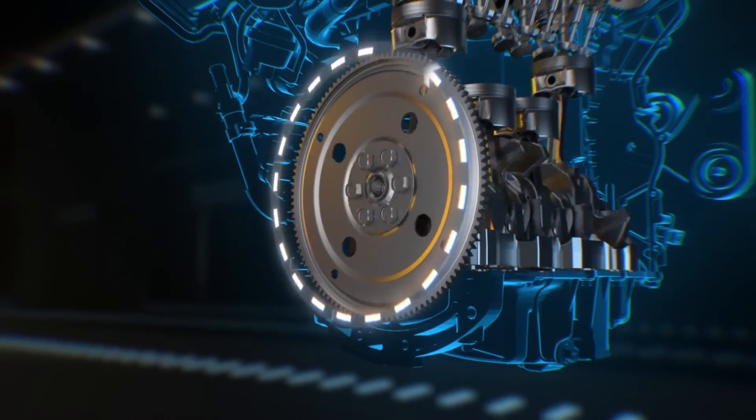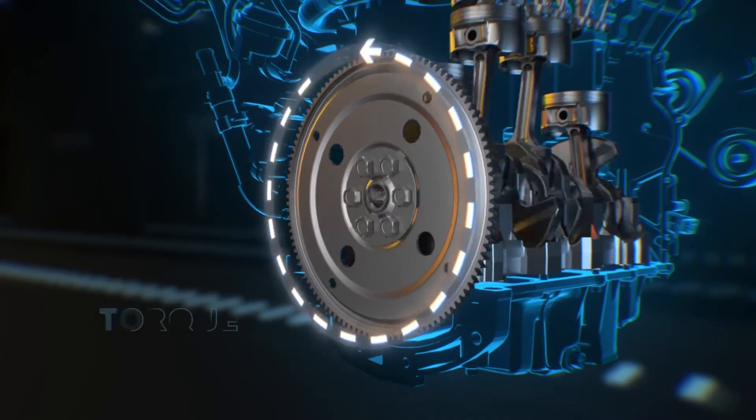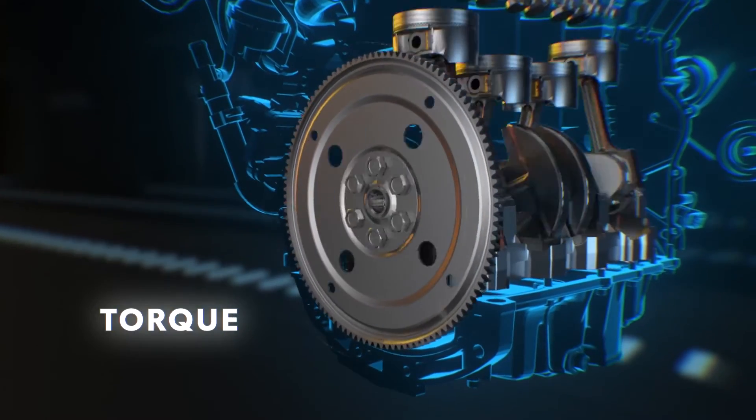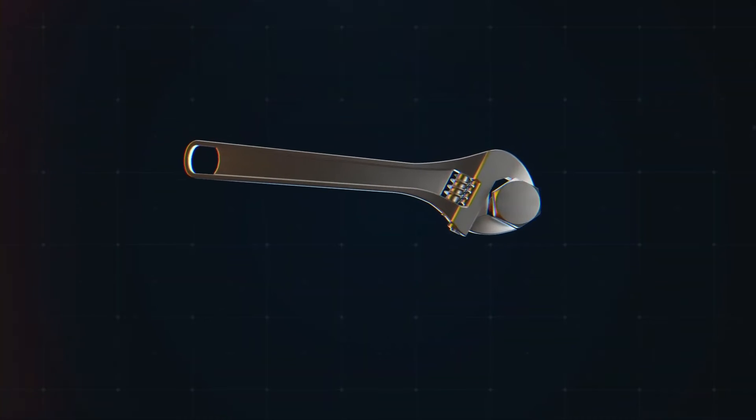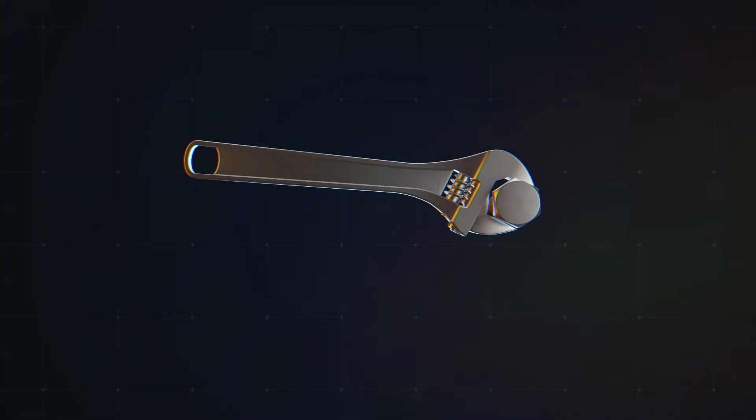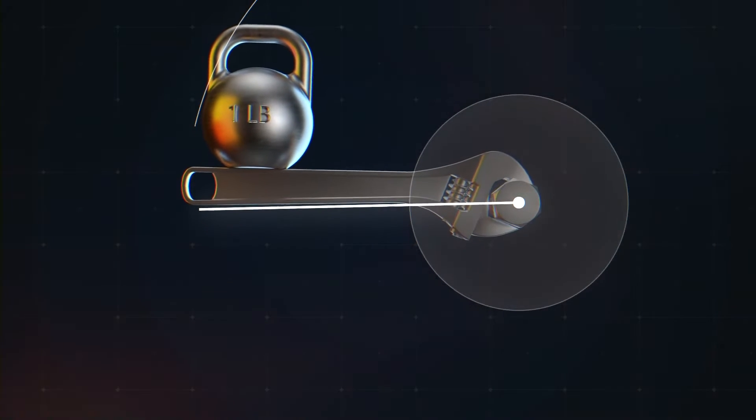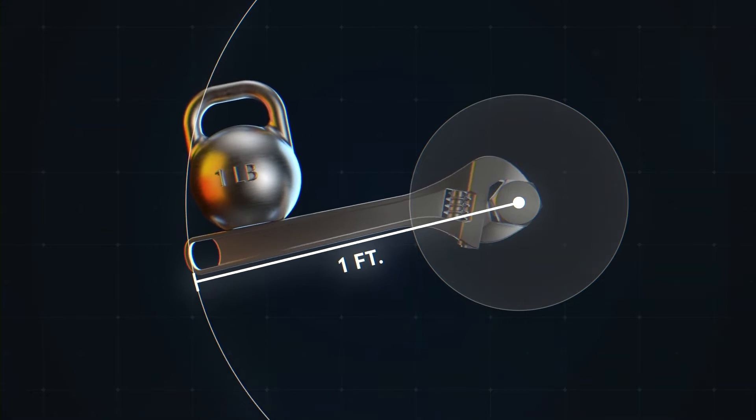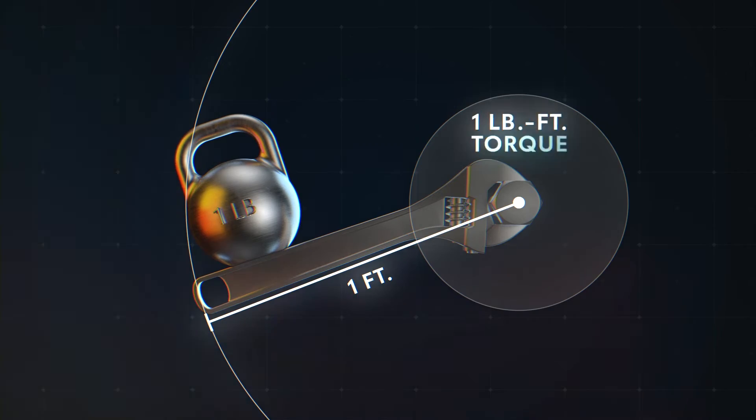So what's the end result of all this? Power. The measurable output of an engine is called its torque, basically the strength with which it turns its crankshaft. Torque is measured in pound-feet, which, as the name implies, is the force created by one pound of weight at a distance of one foot. Imagine a one-pound weight sitting at the end of a one-foot wrench. That nut is being turned with one pound-foot of torque.